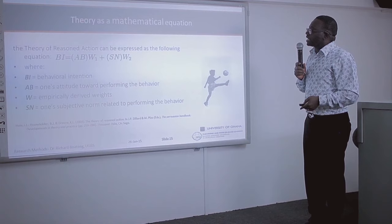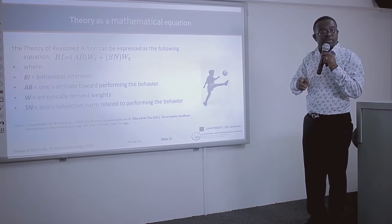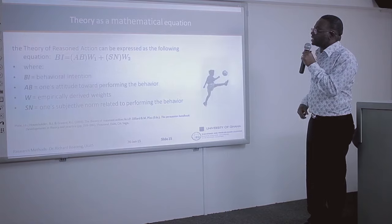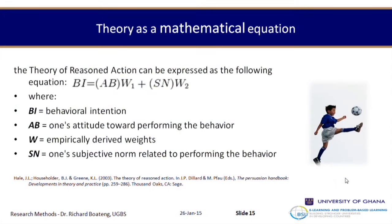A theory can also be expressed as an equation. The Theory of Reasoned Action, out of which the Theory of Planned Behavior was built, expresses behavioral intention as a function of a person's attitude plus a person's subjective norm, with derived weights applied. So in that form it is an equation — just like half base times height gives the area of a triangle, or pi r squared gives the area of a circle. Theories can be expressed as different types of equations.